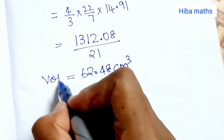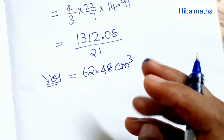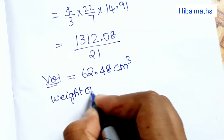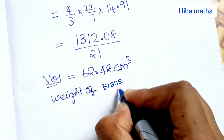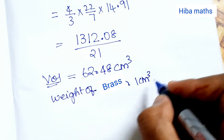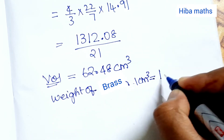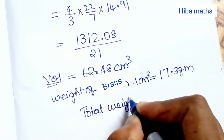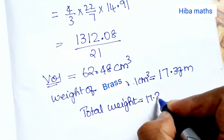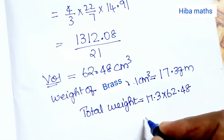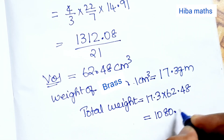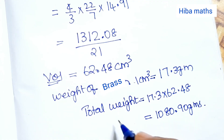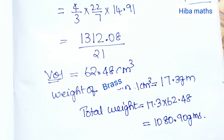Now we calculate the weight using density and volume. The density of brass is 17.3 grams per cm³. Total weight equals 17.3 into 62.48, and multiplying these gives approximately 1080.90 grams. This is the total weight of the hollow brass sphere.